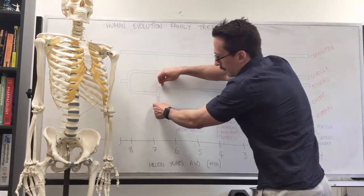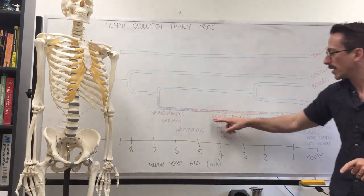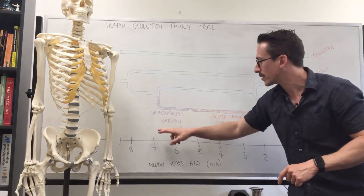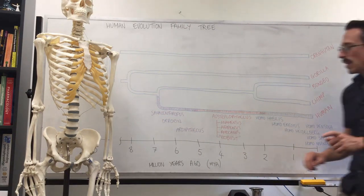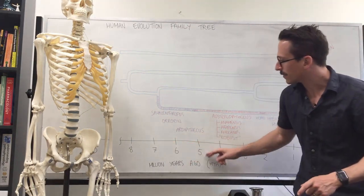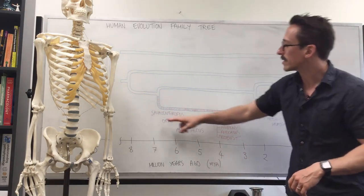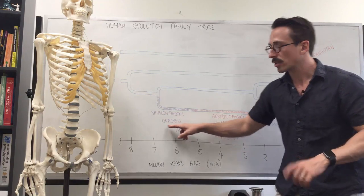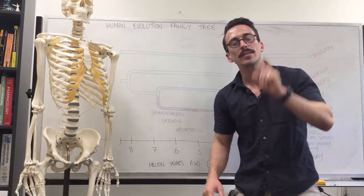We split off from this common ancestor, and we now are looking at the hominins, from Sahelanthropus, Orrorin, Ardipithecus, all the way to Homo sapiens. Between that seven million years to five million years ago, also known as the Miocene, we had Sahelanthropus, Ardipithecus, and Orrorin, and they were bipedal hominins. That means they walked on two legs.